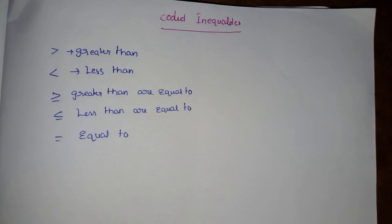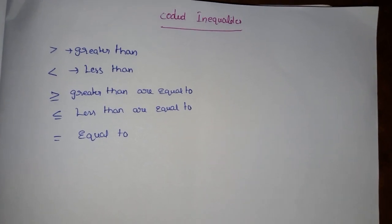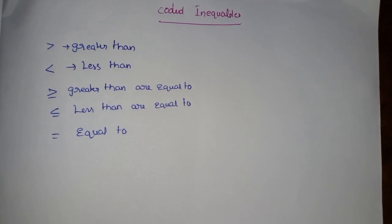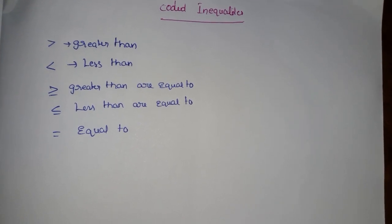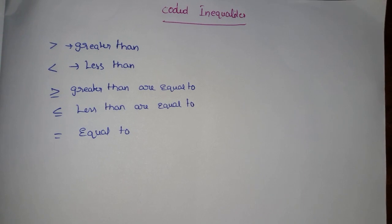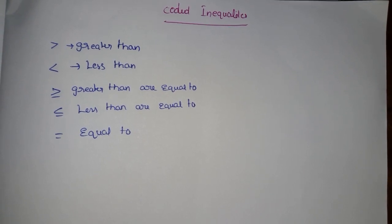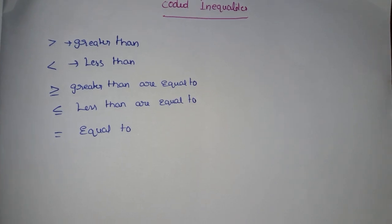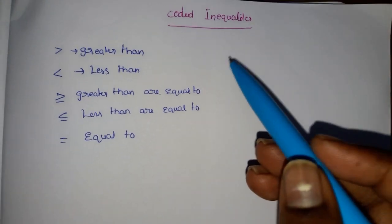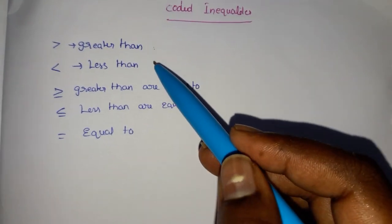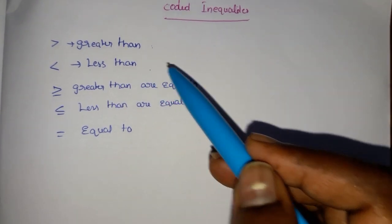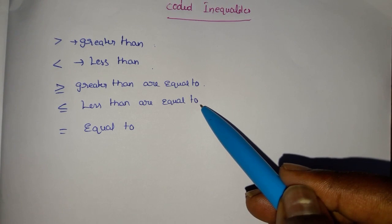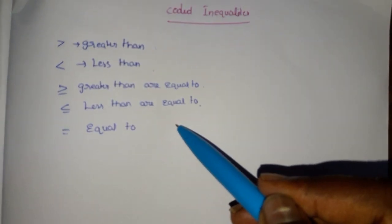Hi Friends. I am choosing the first topic about Coded Inequalities. In Coded Inequalities there are five inequalities: the first one is greater than, the second one is less than, the third one is greater than or equal to, the fourth one is less than or equal to, and equal to.